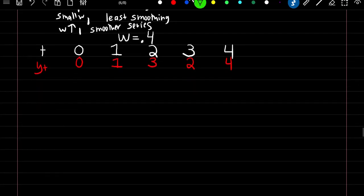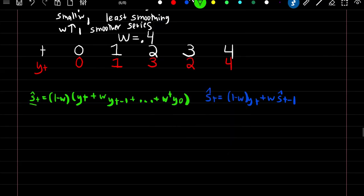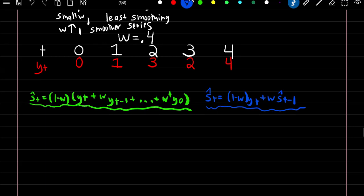There are two formulas for exponential smoothing. One is: the smooth estimate at time t equals (1 minus w) times y at time t, plus w times y at t minus 1, plus so on — essentially taking all observations to form your smooth estimate but using no past smooth estimates. The other is solved recursively, but requires your past smooth estimate.